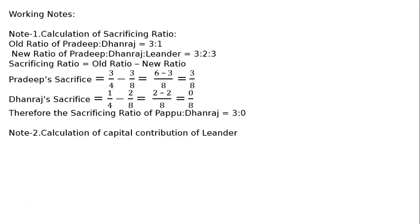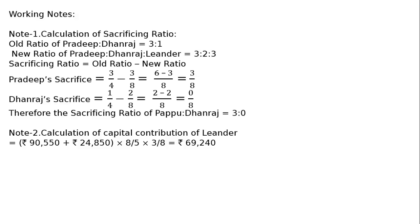Calculation of capital contribution of Lander. It is given in the question that Lander has to contribute proportionate capital — Lander brings in proportionate capital after the following adjustments. Hence, calculate the balance carried down of the two partners: Rs. 90,550 plus Rs. 24,850. This is the share for Pradeep and Dhanraj — 5/8. Reverse this to 8/5 to find out the capital of all three partners, then multiply by Lander's share of 3/8. His capital contribution will be Rs. 69,240.